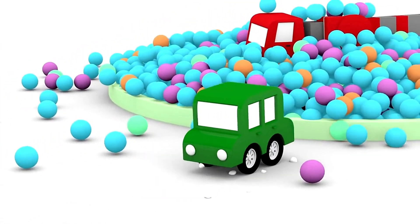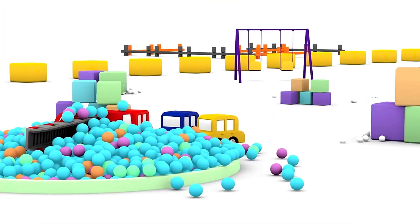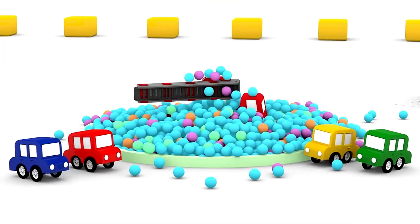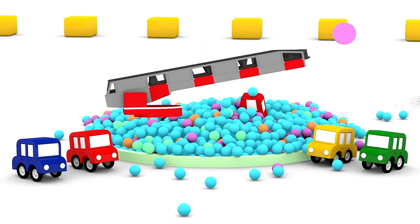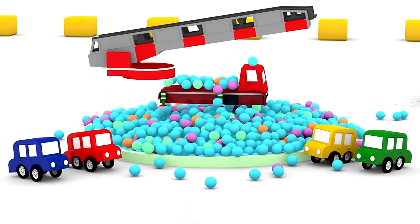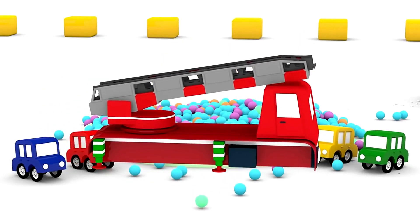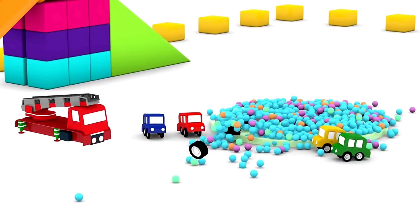Oh look! There is a red vehicle in the ball pool. Can you see? It has a ladder, and this ladder is telescopic. It has a red body. It has six wheels.